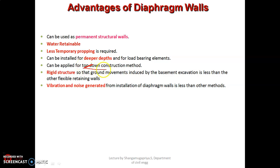Unlike the commonly seen bottom-up construction method, the top-down construction method moves from the top down to the bottom. The diaphragm wall is a rigid structure, so ground movements induced by basement excavation are very low compared to other flexible retaining walls. The vibration and noise generated from the installation of the diaphragm wall is also less than other methods. This method of construction is recommended for deep excavation areas where the diaphragm wall can serve as a permanent structural wall.